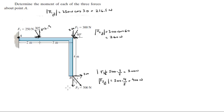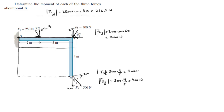The 300 newton component acts along one lever arm and the 400 newton component acts along the other. The lever arm for the 300 N force is 5 meters long, and the one for the 400 N force is 4 meters long, as given on the diagram.